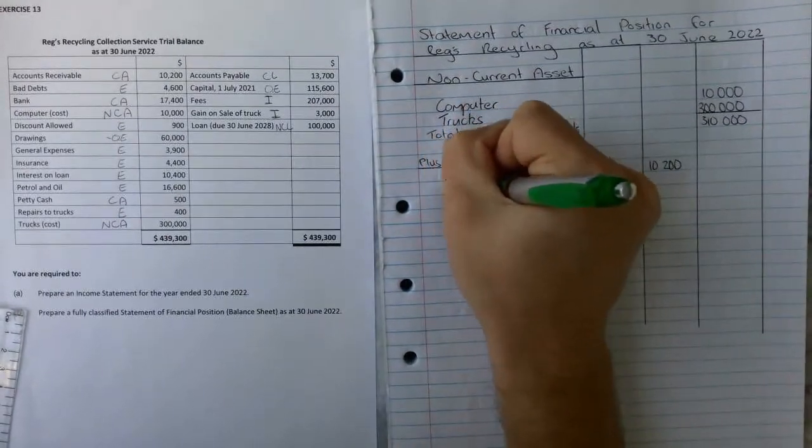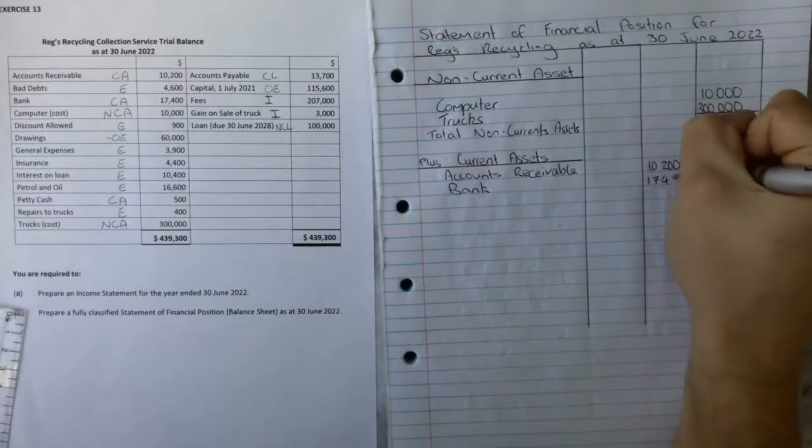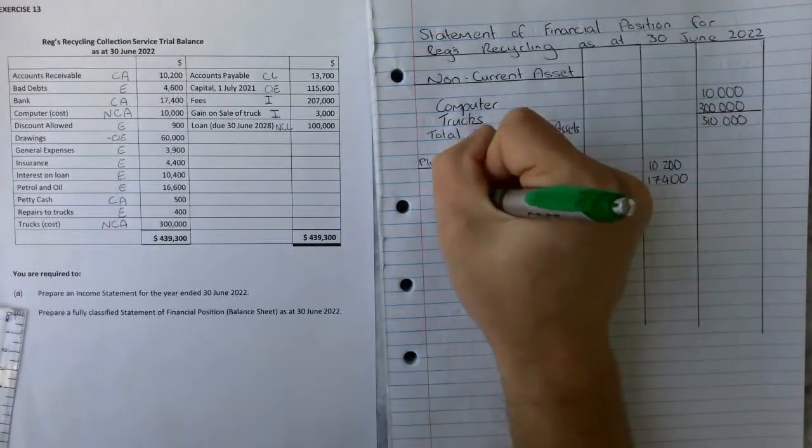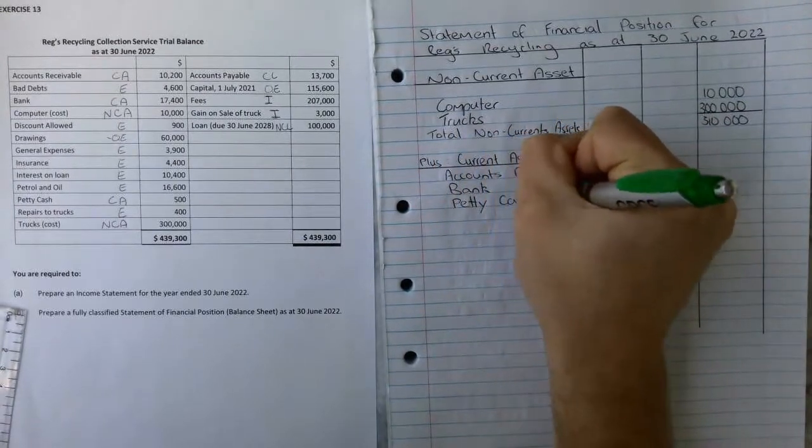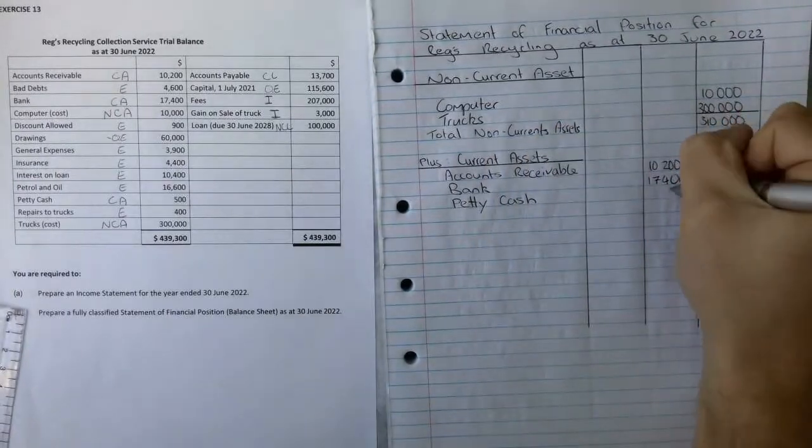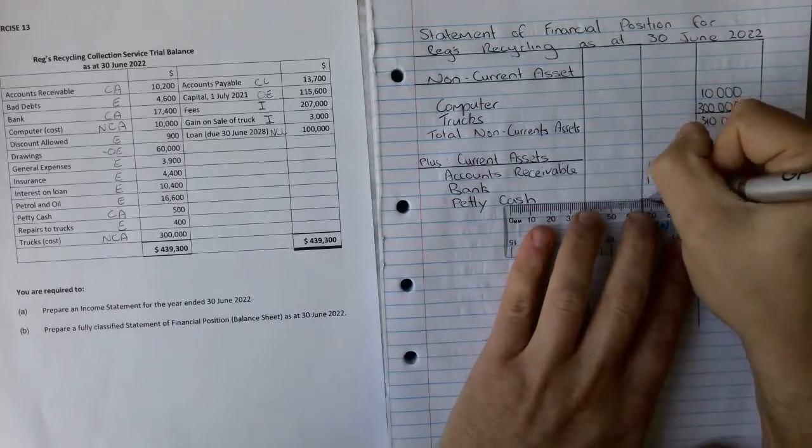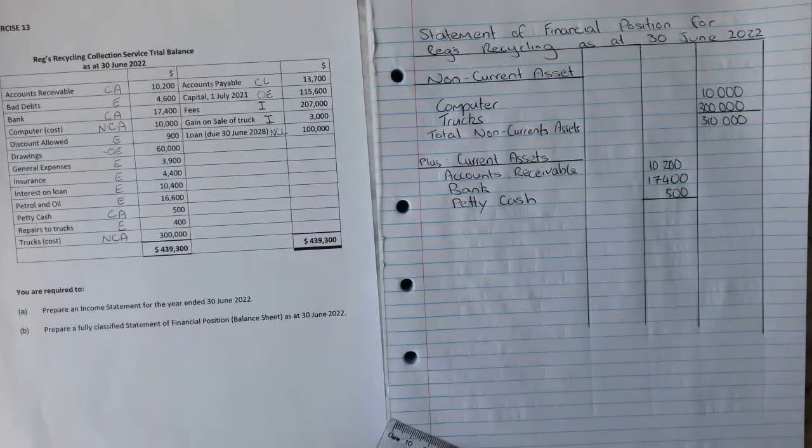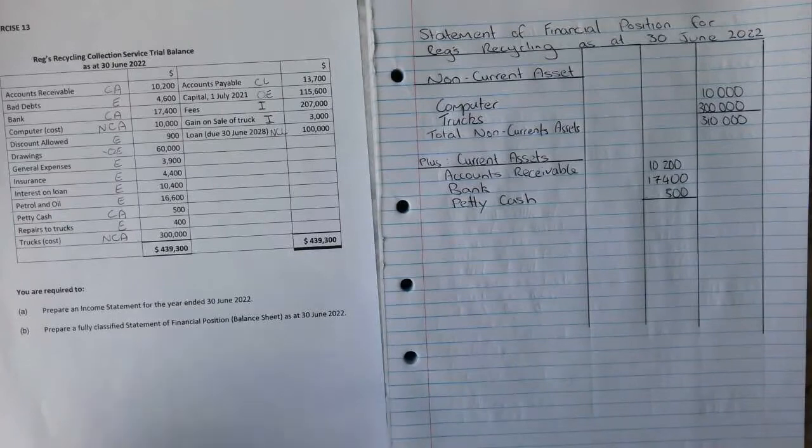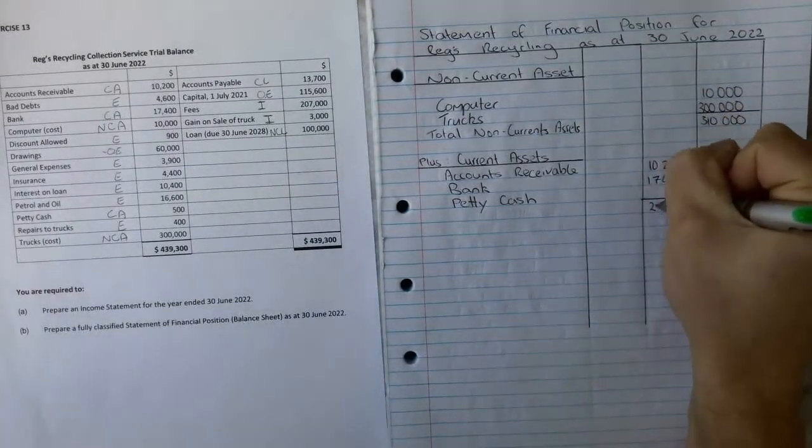Then we go down to the bank which is $17,400. Then we can drop all the way down to petty cash which is $500. So we can total that up.